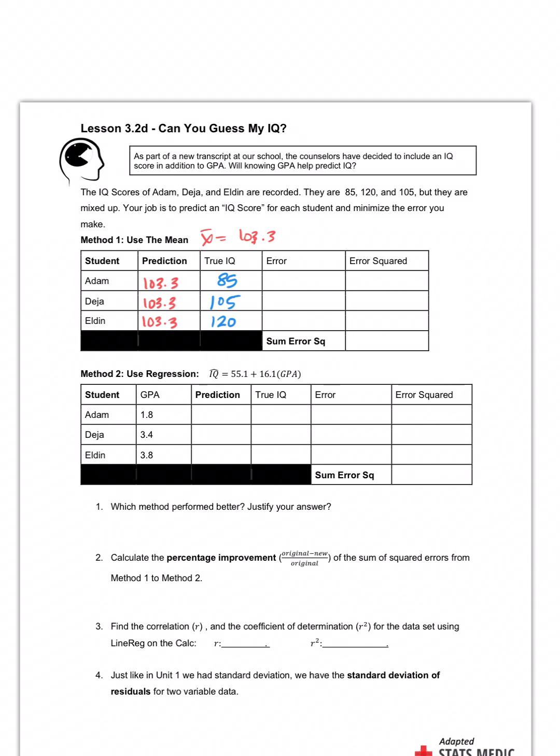Now if I magically know what their true IQs are - you see Adam was an 85, Deja was 105, and Eldon is 120 - so now if I wanted the error, how would I find the error? Same as residual, yep. So it's actual minus predicted. So 85 minus 103 is gonna be negative 18.3, 105 minus 103 is positive 1.7, 120 minus 103.3 is 16.7. And then we square it because it's a distance, right? 349.69, 2.89, 278.89. And then sum of the errors squared - we add these straight down and we get 631.47. It's a lot of error squared.